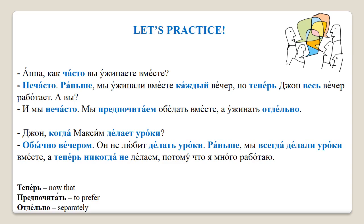Now you will remember a word for 'now' that we have studied before: сейчас. Here we have a very similar word — теперь. However, теперь tends to be used in relation to a previous action. For example, 'I used to work in an office, but now I work from home.' In this sentence we talk about two actions, one of which happened before. Whereas сейчас, which is also translated as 'now,' doesn't have to be linked to a previous action — it can be used in a sentence such as 'right now I am working,' without any reference to what happened before. However, they are very similar in meaning and are both translated as 'now.'